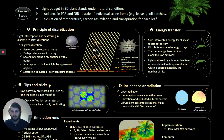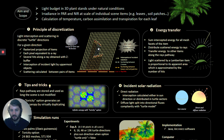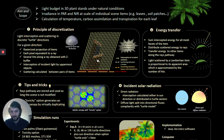Then we compute multiple scatterings between pairs of objects by reusing the path of the rays formerly computed. Here we have an example with two leaves and soil tiles, and we compute the multiple scattering between these objects.